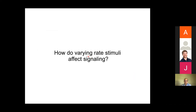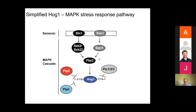We observe that pulse-treated cells versus fast-increasing treated cells can survive roughly tenfold better compared to untreated cells. However, if we slowly increase to the same final stress and the same total amount of stress, cells do not survive so well under slow increase conditions. This points to situations where a slowly increasing stress does not protect the cells. The question that comes from this is: how do varying rate stimuli affect signaling?